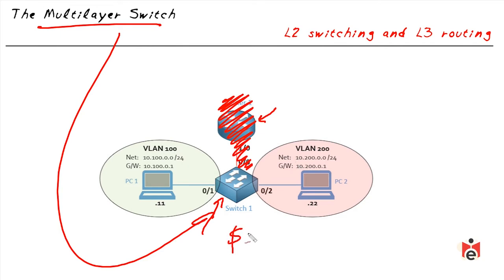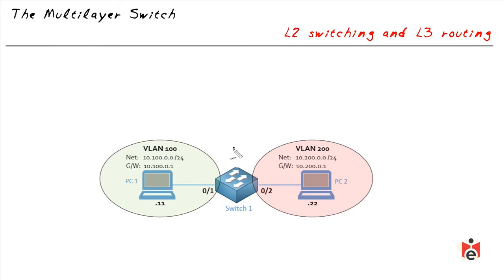We don't lose revenue because we sell fewer physical routers — we just charge more for the features and high-speed capabilities of the multi-layer switch. With multi-layer switching, if a device on the 10.100.0 network needs to forward a packet outside its local network, it still uses its default gateway at 10.100.0.1. On the switch, we create new logical interfaces that serve as the IP address of the default gateway.